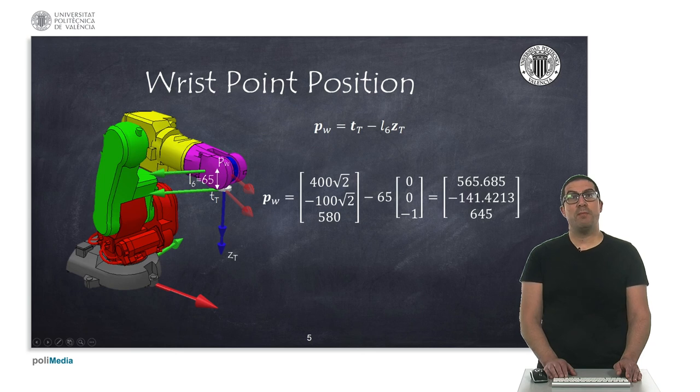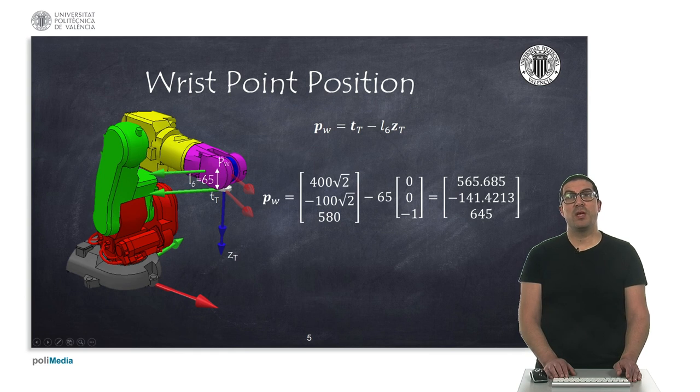To compute the inverse kinematics analytically with this type of robot we must find out the position of the wrist point. This point is obtained by subtracting the distance between the end effector point and the point where axes 4, 5 and 6 intersect. You can easily see that the position can be obtained by subtracting to the end effector position pt a quantity in the direction of the z axis of the last link, which is based on our specifications. This should be the vector zt.